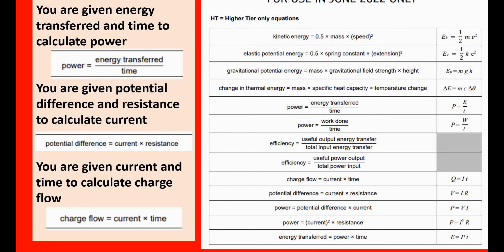Hopefully you chose: power equals energy transferred divided by time; potential difference equals current times resistance; and charge flow equals current times time. All you're doing is matching up the quantities given in the question with the quantities on the equation sheet. Don't be tempted to shorten them or change the symbols — copy them exactly from the equation sheet, using AQA symbols and words. Take advantage of it; you're the last year to get these equations.